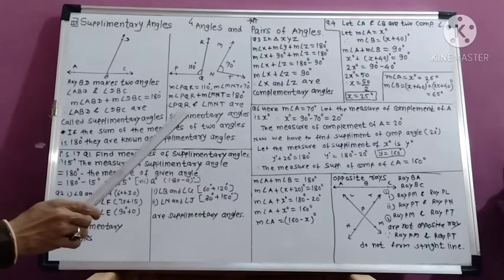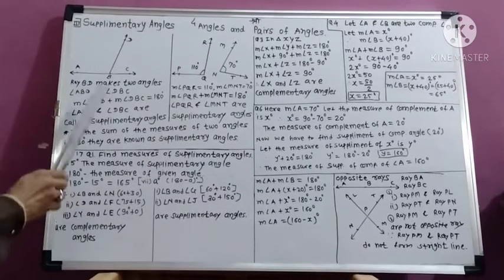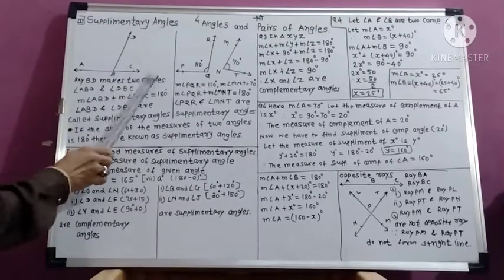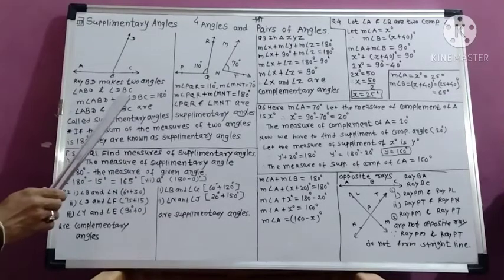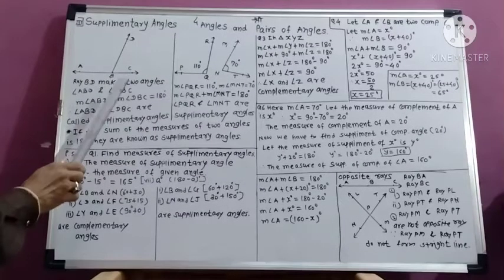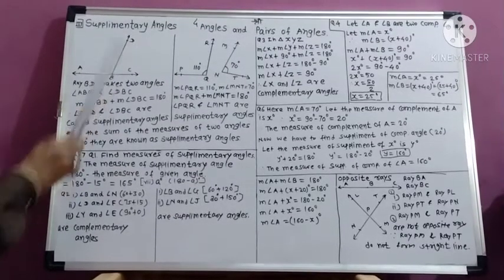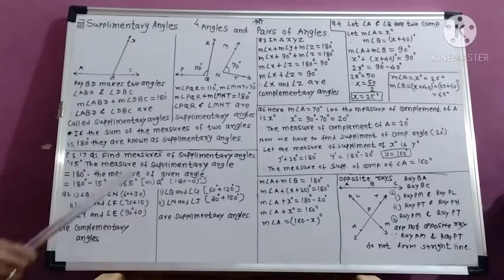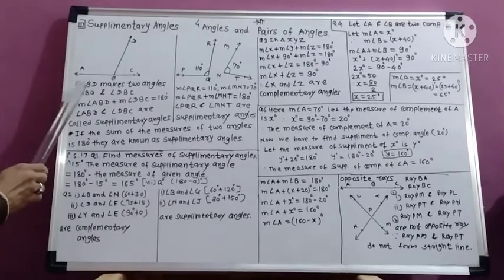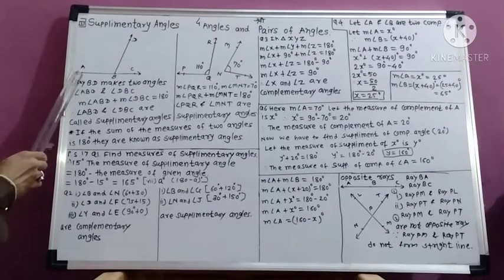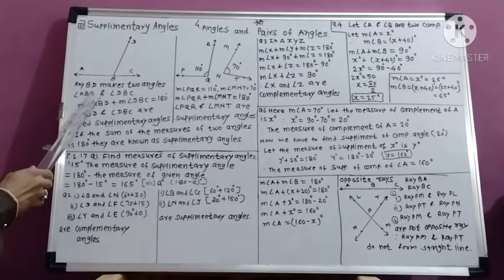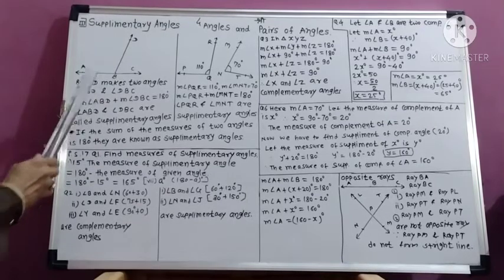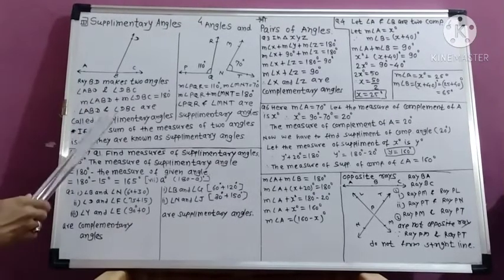To understand supplementary angles, observe this figure. In this figure, line AC has point B on it. Draw Ray BD from point B. Ray BD makes two angles: Angle ABD and Angle DBC.